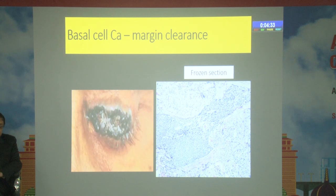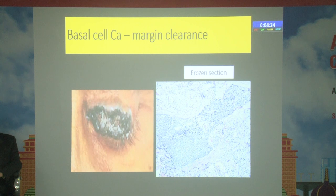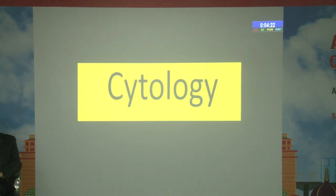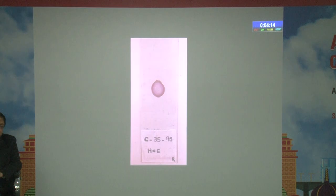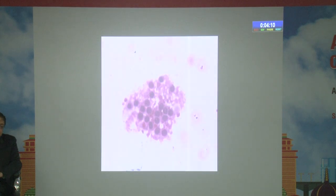This is a basal cell carcinoma, and you can see the tumor mass extending to the margin — this is a frozen section study. For cytology, we use a machine called the cytospin, which revolves at 1000 RPM for 5 minutes, and the cells are concentrated so we can elegantly see the cytology of the specimen's concentrated smear.